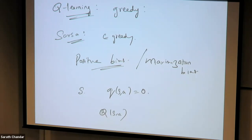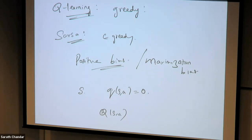This bias could be problematic and lead to overestimations. These overestimations have a very deep impact because you are bootstrapping. If you are not bootstrapping, then probably these overestimations won't affect things much, but since you are bootstrapping, these overestimations are going to get bootstrapped to other states and your Q values might go up.